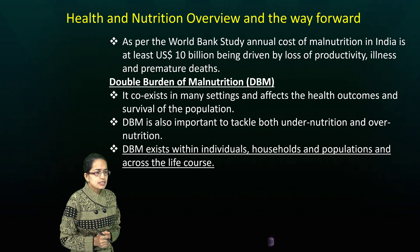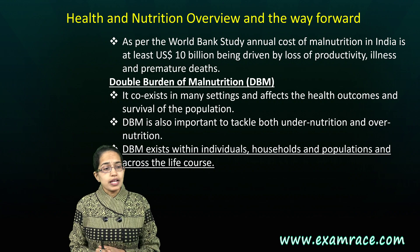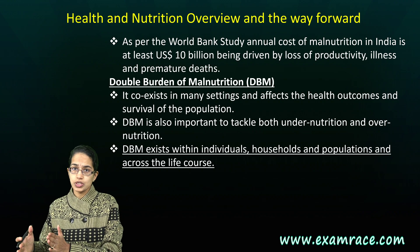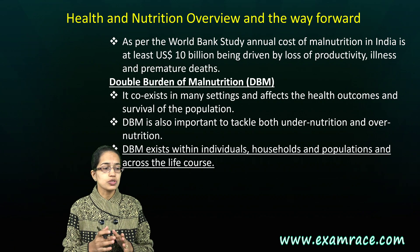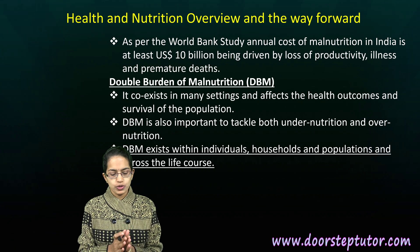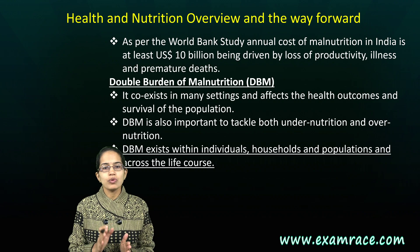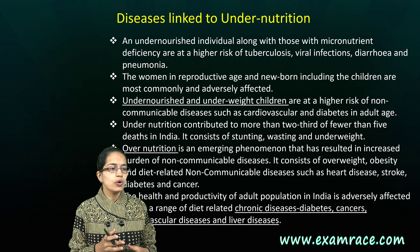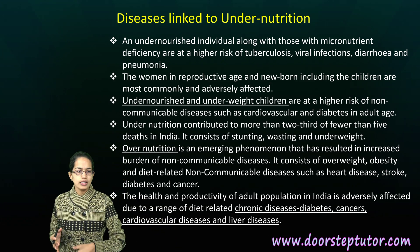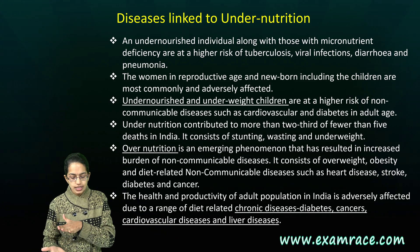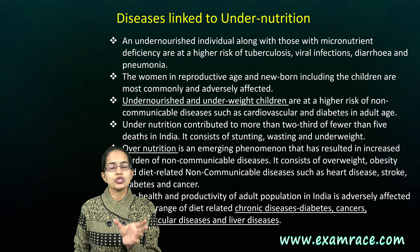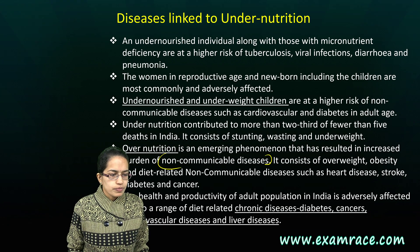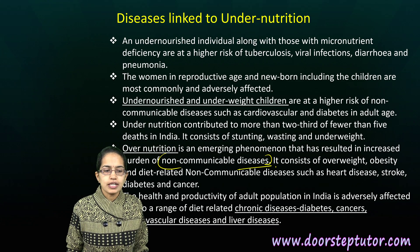The double burden of malnutrition means there are health risks associated with both undernutrition and overnutrition. For overnutrition, we usually have non-communicable diseases as a higher burden — these could be heart disease, stroke, diabetes, and cancer.